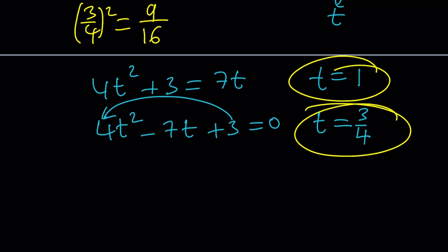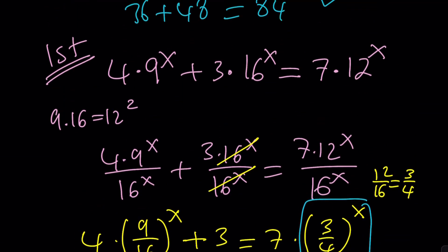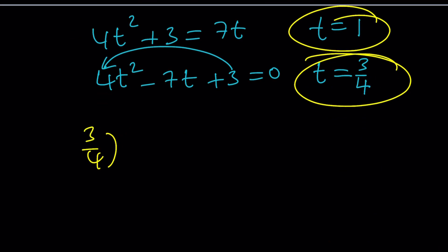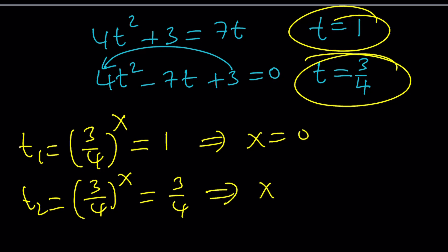Now, those are the t values, but what is t? t is 3 over 4 to the power of x. Of course, as before, we get 3 over 4 to the power of x is equal to 1, which implies x equals 0, or 3 over 4 to the power of x, because these are the t values. t sub 1 and t sub 2, let's call them. And the second one gives you x equals 1. As before, those are going to be the real solutions.